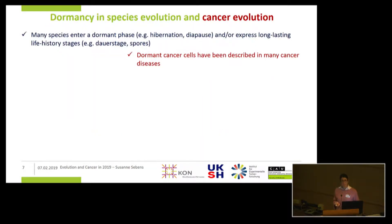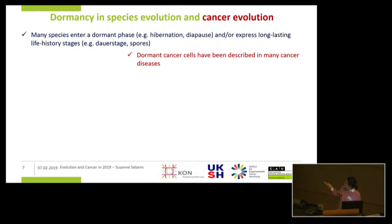Interestingly, dormancy is not a cancer-specific phenomenon — rather, it's highly conserved in species evolution. In fact, many species such as mammals, amphibia, plants, fungi, and bacteria can enter a dormant phase or express long-lasting history stages such as hibernation, diapause, dauerlarvae stages, or spores. As in cancer — first described in breast cancer — dormant cancer cells have since been identified in many other cancer entities.